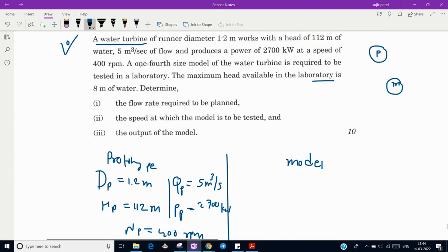Now one-fourth size model of the water turbine, that means diameter of model divided by diameter of prototype will be 1 by 4. So divide by 4, you will get diameter of the model, that is 1.2 divided by 4, which is 0.3 meter. The maximum head available in the laboratory is 8 meter.